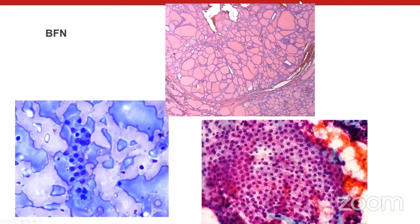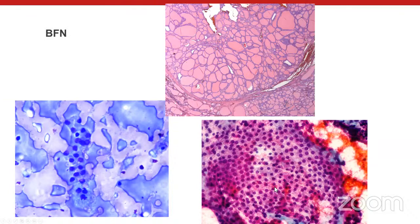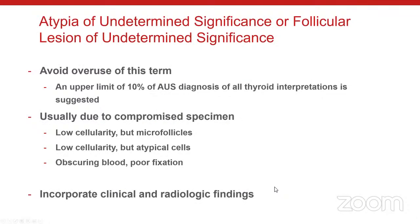BFN should be our most common thyroid diagnosis. The ideal FNA shows: colloid, follicular cells in monolayer sheets, evenly spaced nuclei similar in size to adjacent red blood cells, and granular chromatin. These are benign features. Sometimes you don't need abundant colloid to call BFN — as long as you have nice benign architecture and benign nuclear features.